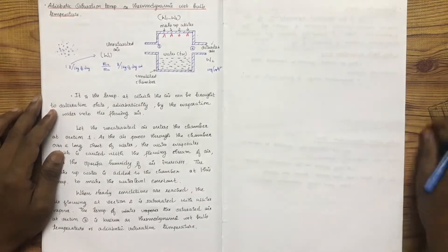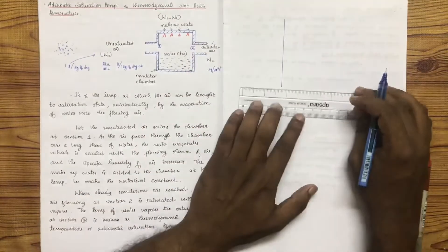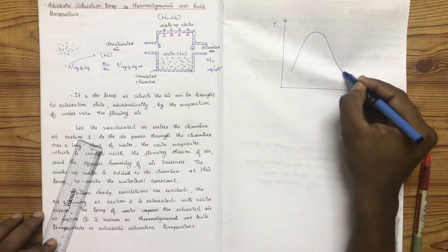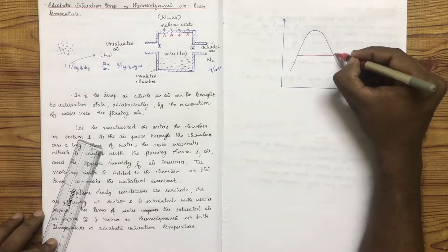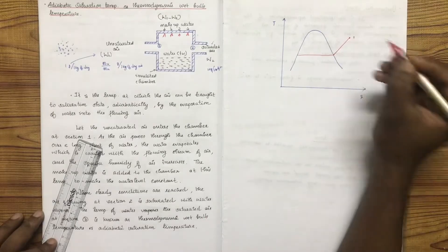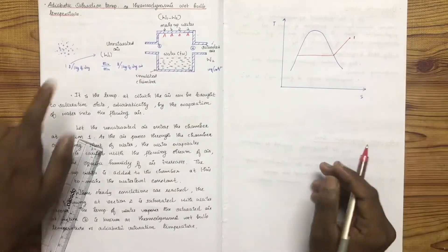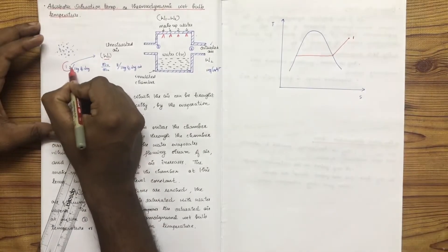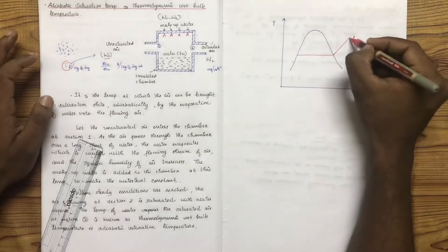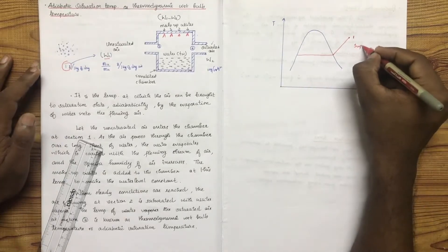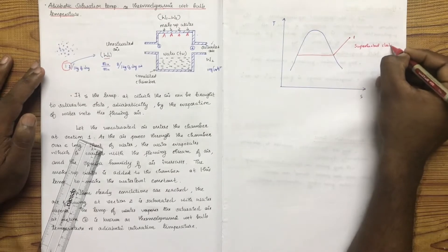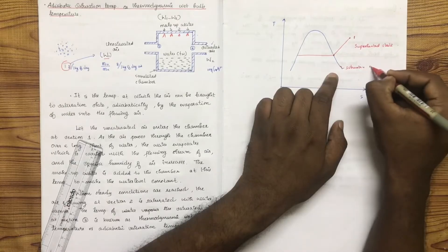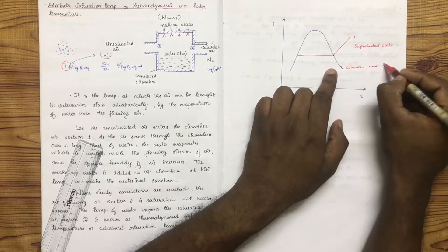First of all, we have to explain the T-S diagram. At normal temperature, we examine the water vapor — the saturation is not yet contained in the water vapor. This is point 1 on the diagram, representing the water vapor in an unsaturated amount. The water vapor is at the superheated state, not the saturation state.